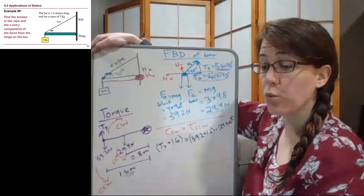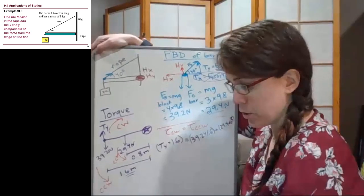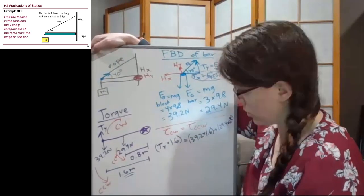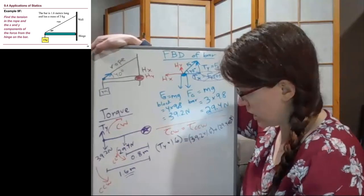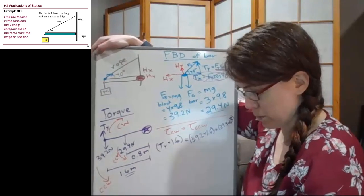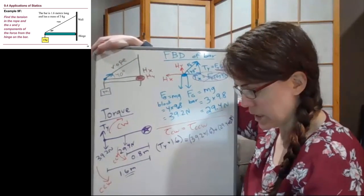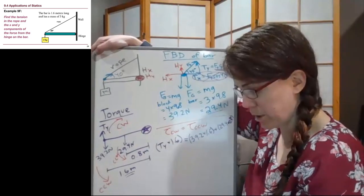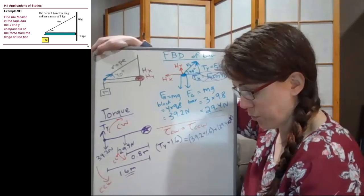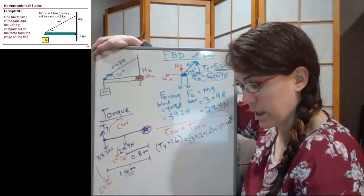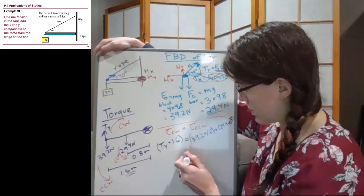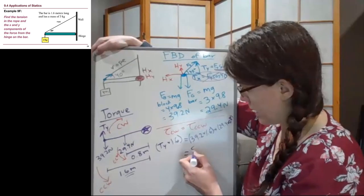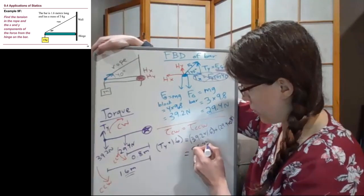So, I'm going to plug this whole right side into my calculator. You can do it in two steps, but I'm just going to do it all in one. So it's 39.2 times 1.6, and I put that in parentheses just to kind of make sure I knew that that's the order of operations. The 29.4 is multiplied by 0.8, and when those terms are all added together, we get 86.24.